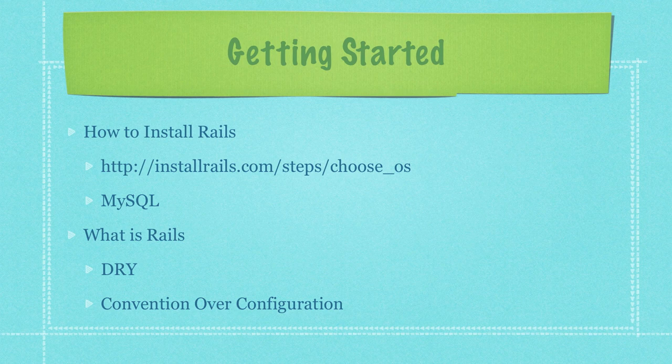Another principle Rails follows is 'Convention over Configuration.' Rails provides default ways of doing everything, and what's great about this is it's going to minimize the amount of code you have to write — basically just what you personally decide to customize about your web application. Another great thing is that Rails defaults follow all of the best practices for web application development.